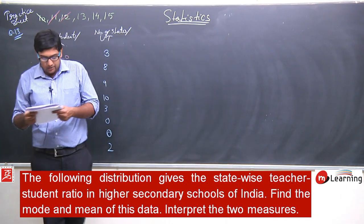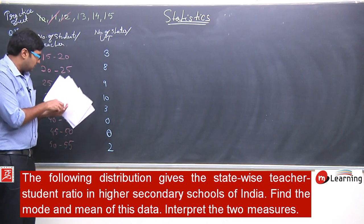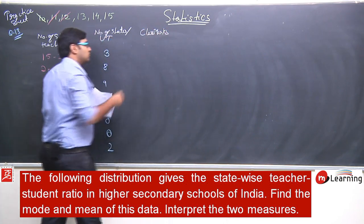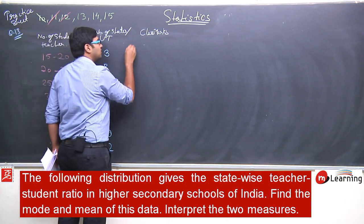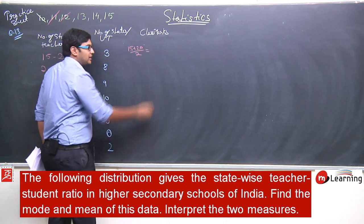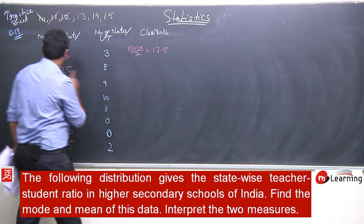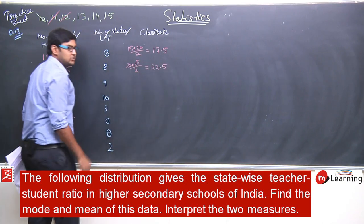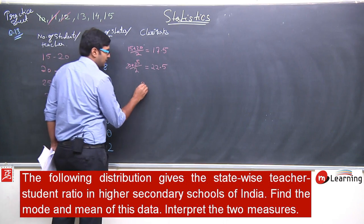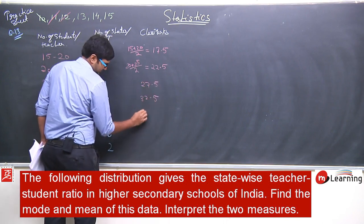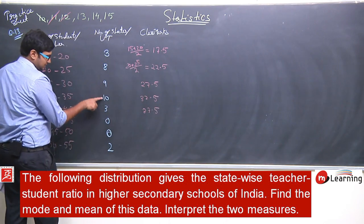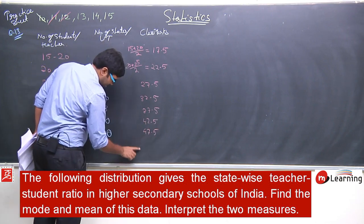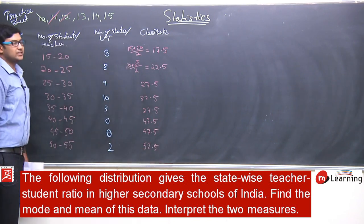Our task is to calculate the mean and the mode. For calculating the mean, I will calculate class marks. The class mark is calculated as (lower + upper) / 2: so 15 + 20 / 2 = 17.5, then 22.5, 27.5, 32.5, 37.5, 42.5, 47.5, and 52.5. These are the class marks.